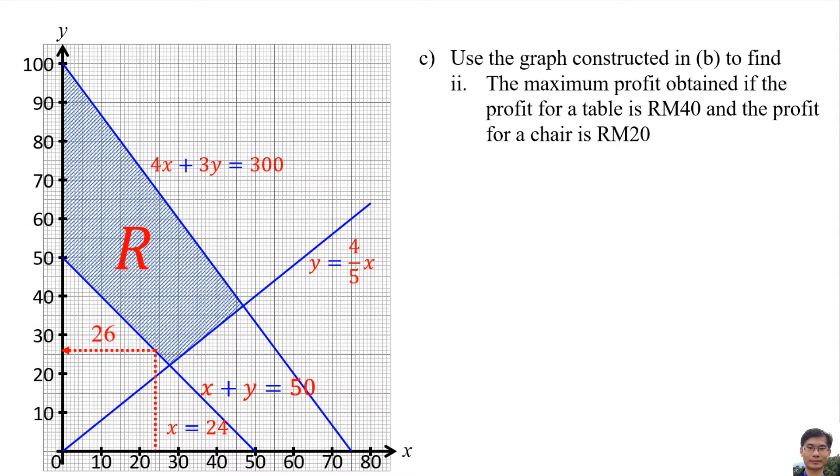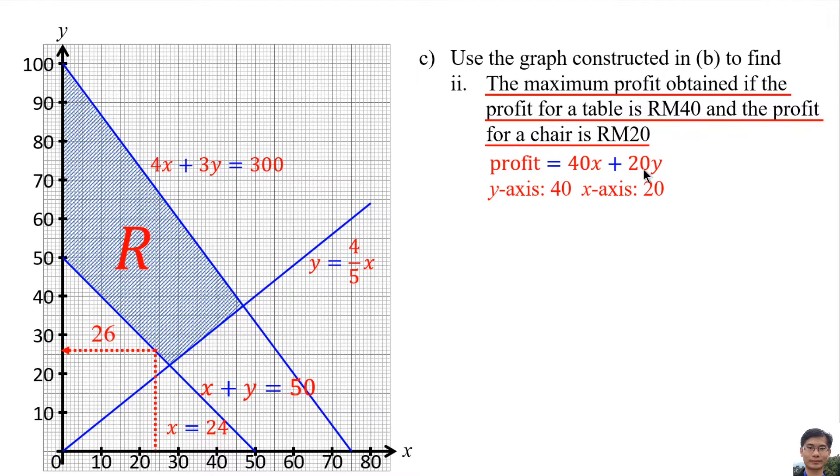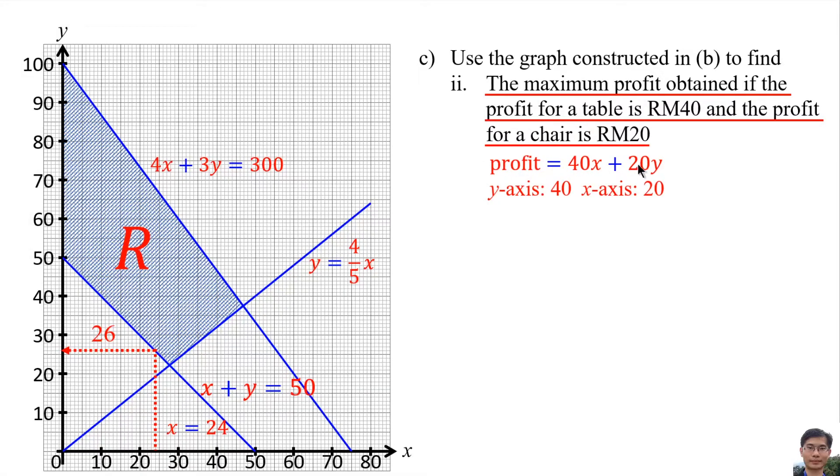The maximum profit of them if the profit of table is 40 ringgit and the profit of a chair is 20 ringgit. It means the profit is 40x plus 20y. Then we need to draw these equations on the graph. We draw this equation to use the trick. We plot a point on y axis as the coefficient of y, it means 40, and then on x axis, plot a point as the coefficient of x, 20.